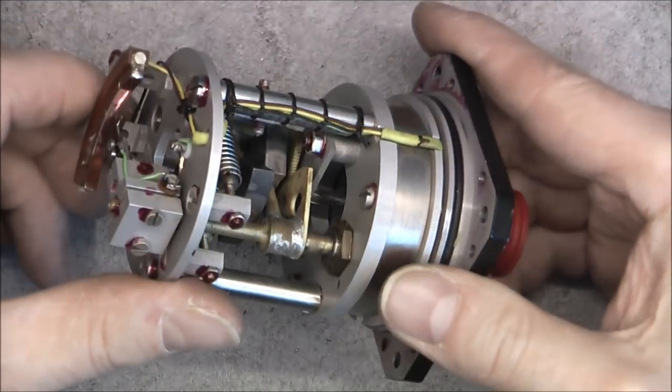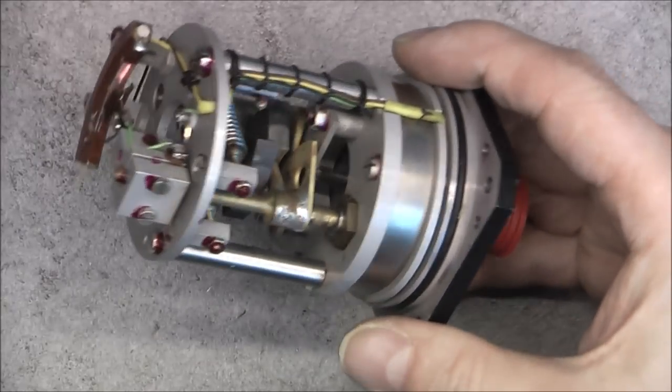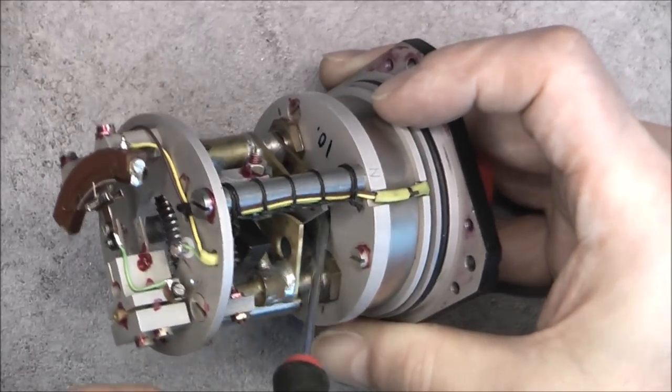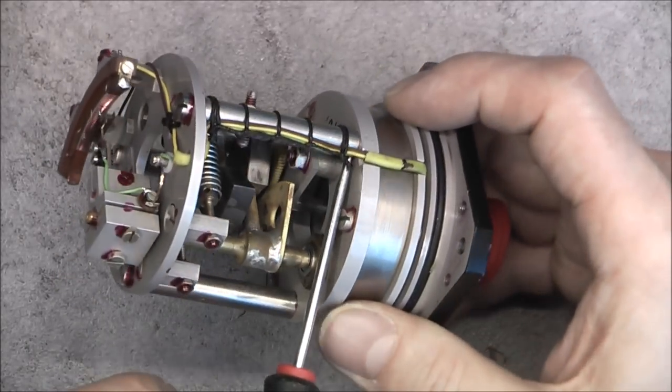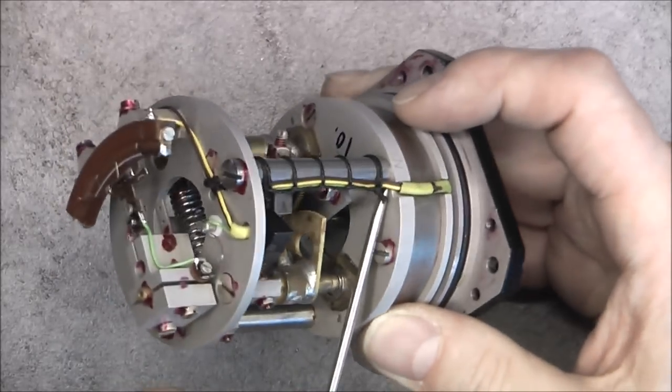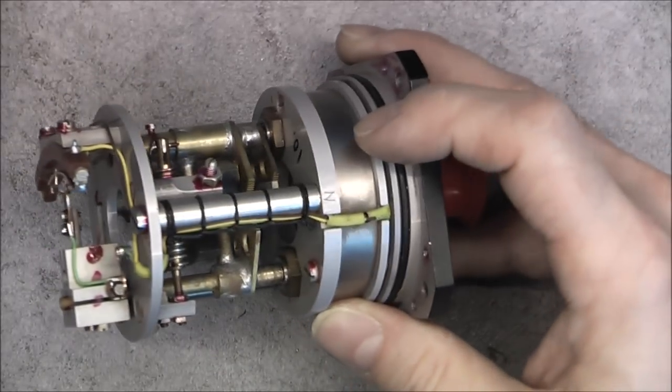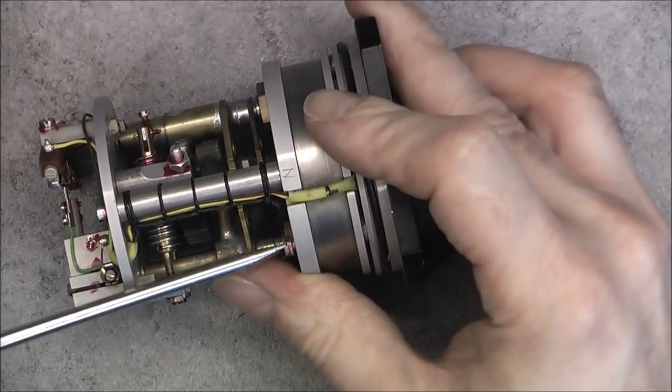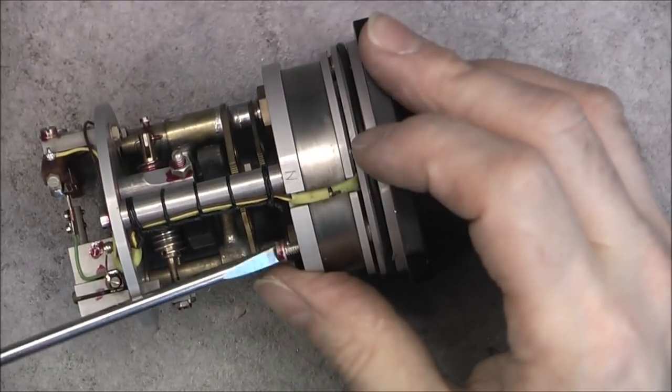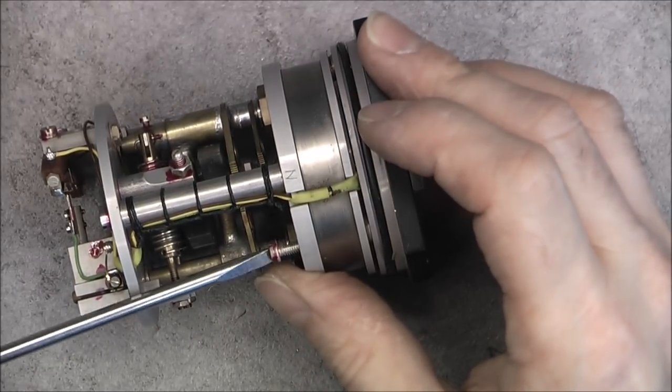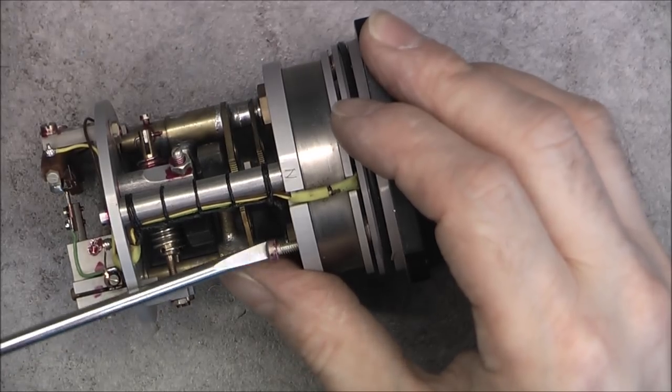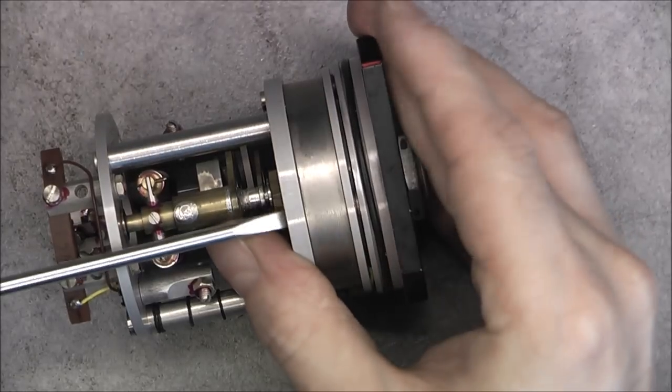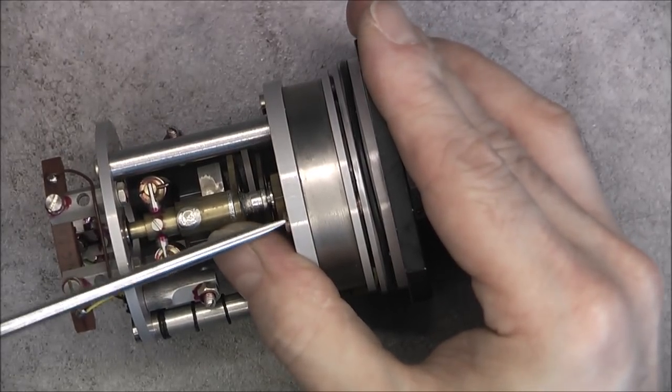But it looks like we have something else because I can see the shaft here that is going in here. I do only have three wires here but I have six pins on the connectors. So let's try to undo it further. I see six screws here, three screws excuse me.